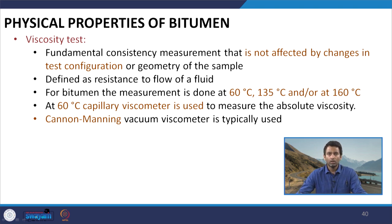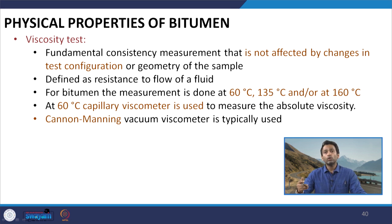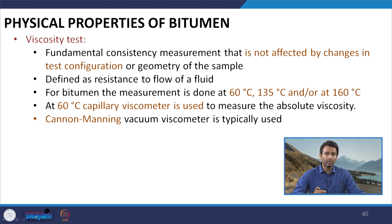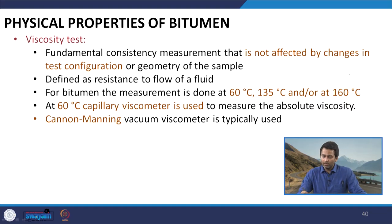At higher temperatures, especially at temperatures typical of the mixing plant, we want good workability of the hot mix asphalt. Since bitumen is the binding agent, it is the primary ingredient providing workability to the mix. At higher temperatures we want the bitumen to be soft enough to be easily mixed with mineral aggregates and well compacted in the field. Therefore, ensuring that bitumen is not excessively stiff at very high temperatures, we are interested in doing the viscosity test at 135°C to assess the mixing and compaction temperature of hot mix asphalt.